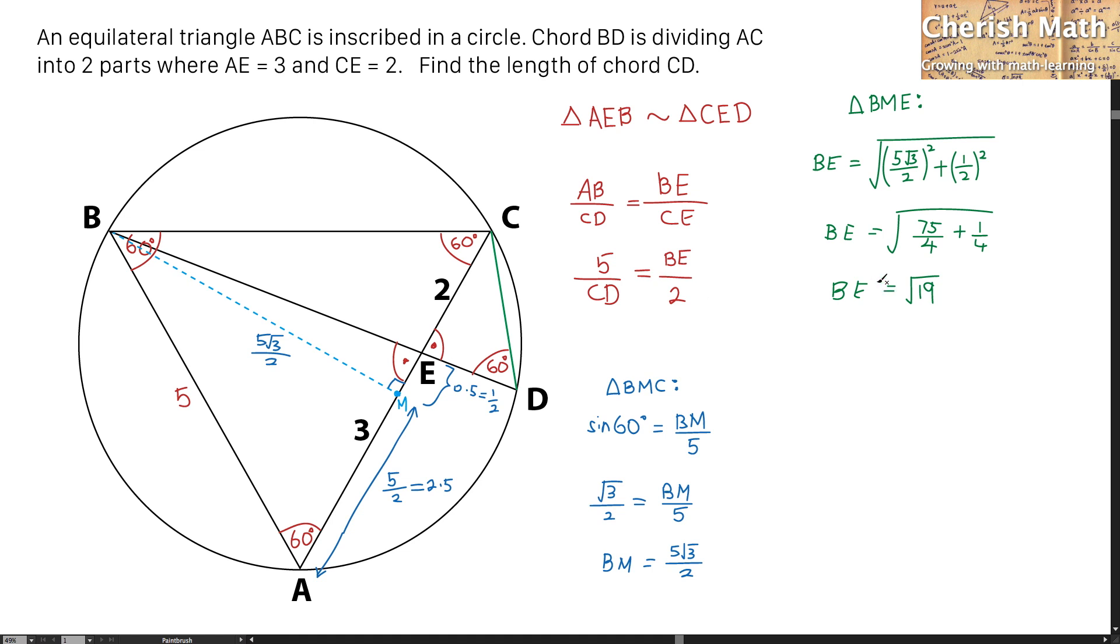For the last time, I am going to substitute the value of BE into this equation that I got from the very beginning. So now that is going to be 5 over CD equals the square root of 19 substituted here divided by 2. The value of CD here that I got is 10 divided by the square root of 19. And I solved the puzzle.